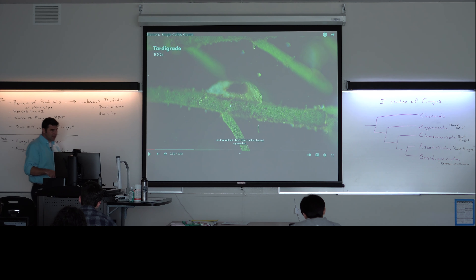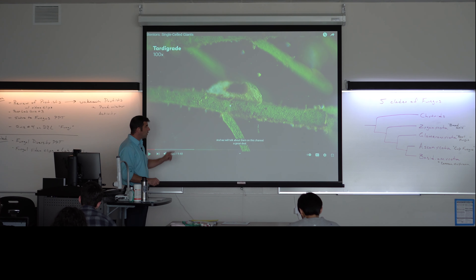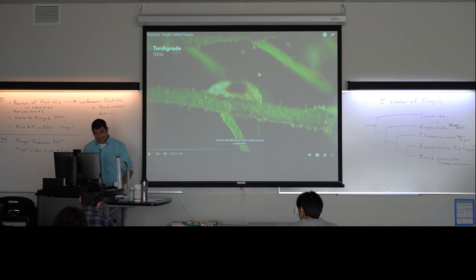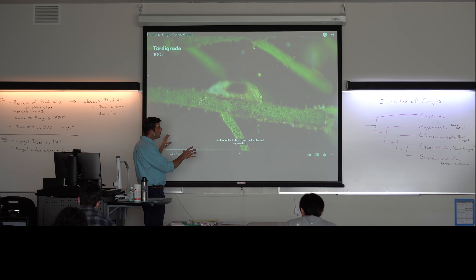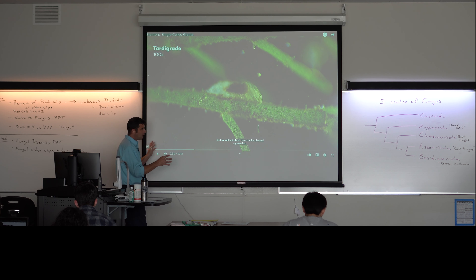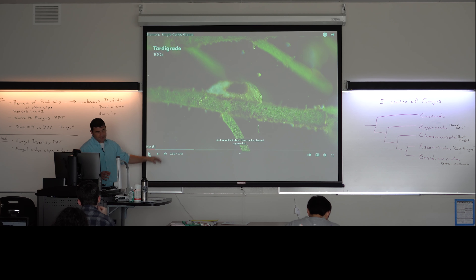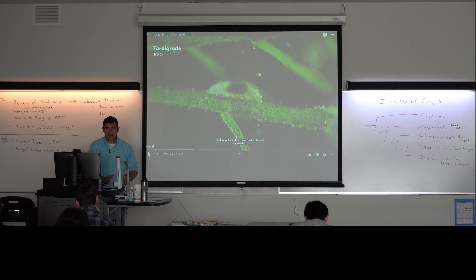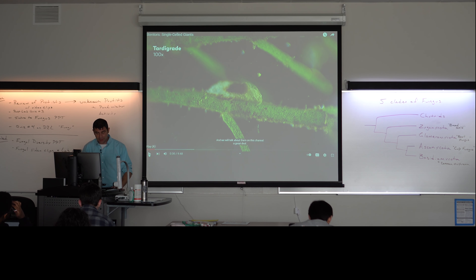We had a lab activity last time and one of the cool things that I brought out were tardigrades — we got to at least see them moving around. The video starts out with a cool picture of one of these tardigrades. The microscopes they're using in this video are much sharper and more expensive than the ones we have access to here. There are about four clips that we're going to see, none of them very long. I can talk through them as they go. This first one starts with tardigrades but then quickly switches to something else that we got excellent examples of last time in lab.